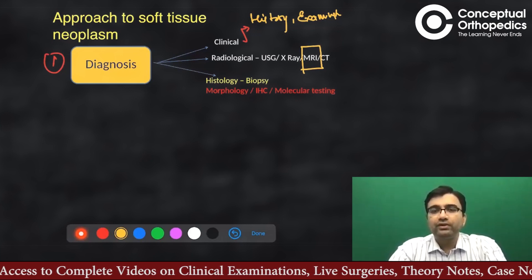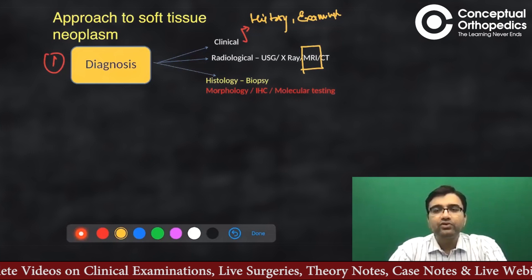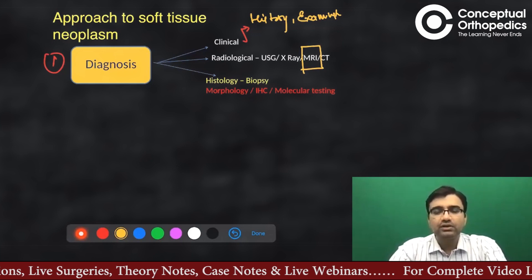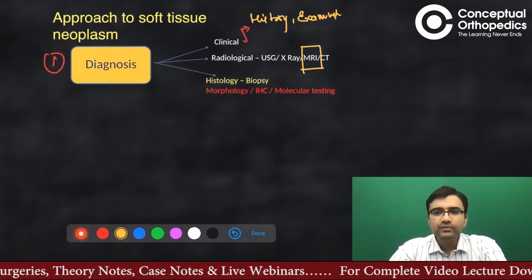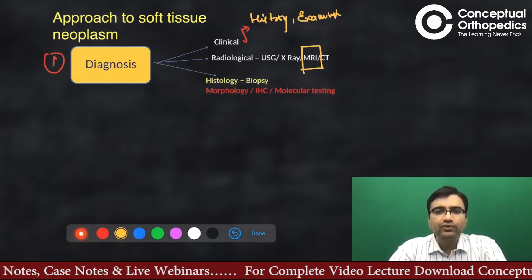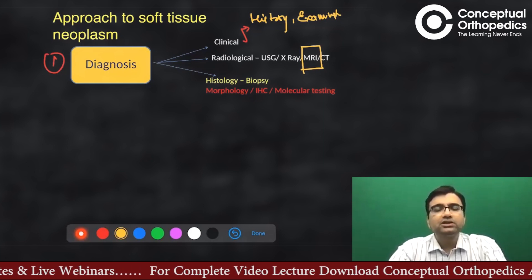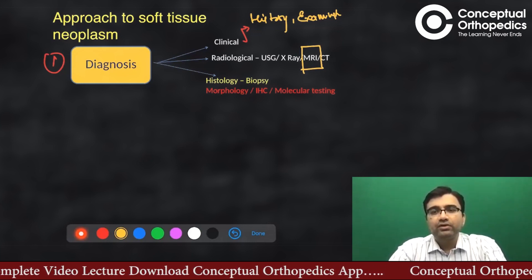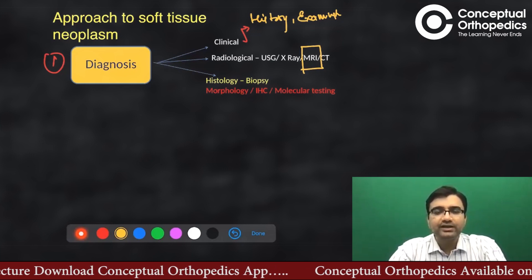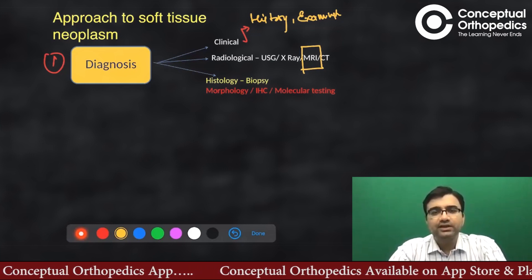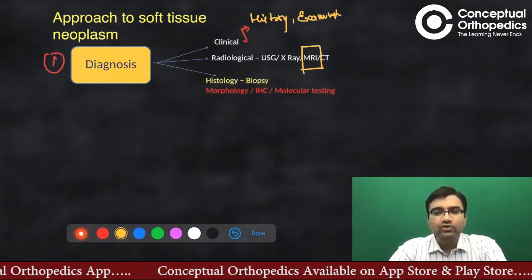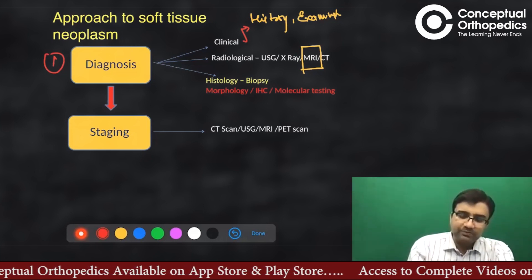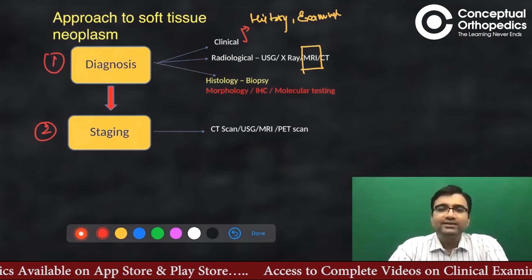In both bone tumors and soft tissue tumors, we need histopathological confirmation through biopsy. Sometimes we need further testing with immunohistochemical markers and, especially in soft tissue sarcomas, molecular testing — genetic translocation studies, such as in synovial sarcoma and Ewing sarcoma — are very helpful. Once you've confirmed there is a sarcoma, you need to stage it.